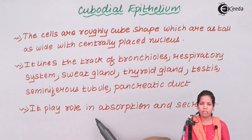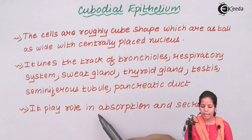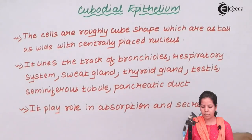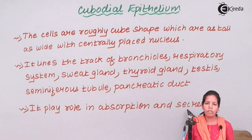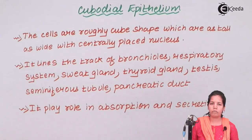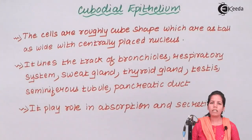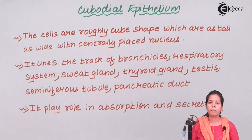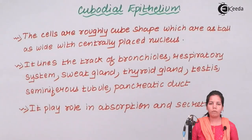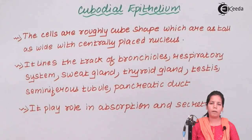In totality, cuboidal epithelium cells help in absorption as well as secretion of various substances. Absorption can occur in the region of the respiratory tract, and secretion in the region of the digestive glands. In this part of the chapter we studied cuboidal epithelium cells — how they function, their different characteristics, and their main function. I hope you are all clear about this concept of cuboidal epithelium. Thank you.